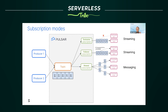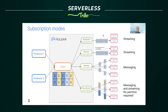What if you need to scale consumers to consume as fast as possible like shared mode, but still process messages in the right order? Then you use the key shared mode. This is the same as shared mode, but messages produced with the same key are always delivered to the same consumer, so you can process all messages with the same key in the right order. Key shared mode is great for scaling out consumers without creating new partitions — it's completely dynamic, and that's pretty cool.